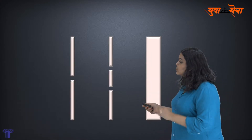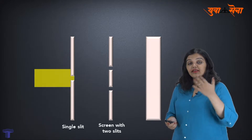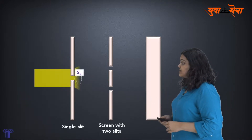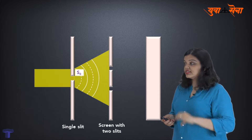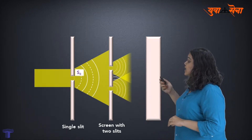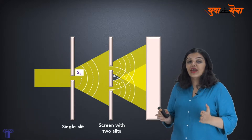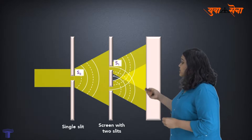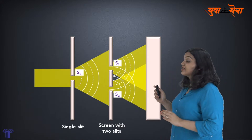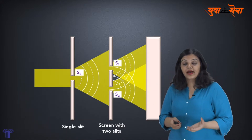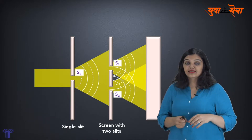In Young's double slit experiment, you take a narrow single slit, light is incident on it, and the light which passes through this single slit S is then incident on two parallel narrow slits separated by distance d. These two slits, S1 and S2, act as coherent sources, and the two sets of waves from S1 and S2 interfere to give an interference pattern on the screen — regions of variation of intensity.